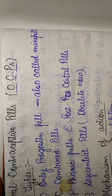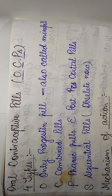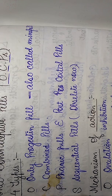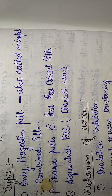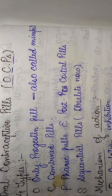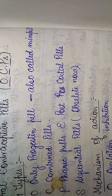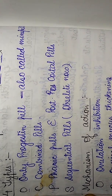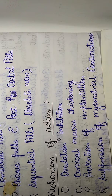This was the mnemonic or short trick to easily remember the classes of drugs used in oral contraceptives and the mechanism of action of oral contraceptive pills — both by using the same mnemonic, OCPs.